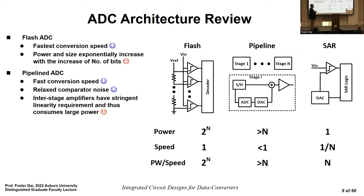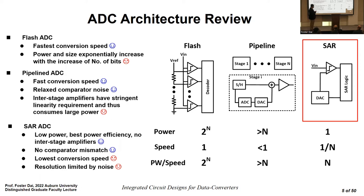The third architecture is the SAR ADC, which has recently attracted attention in the industry because it has the best power efficiency. It uses just one comparator, reusing it for different conversion bits, so there is no mismatch problem among comparators. However, the speed is slow because it requires N cycles to convert N bits in one sample period.